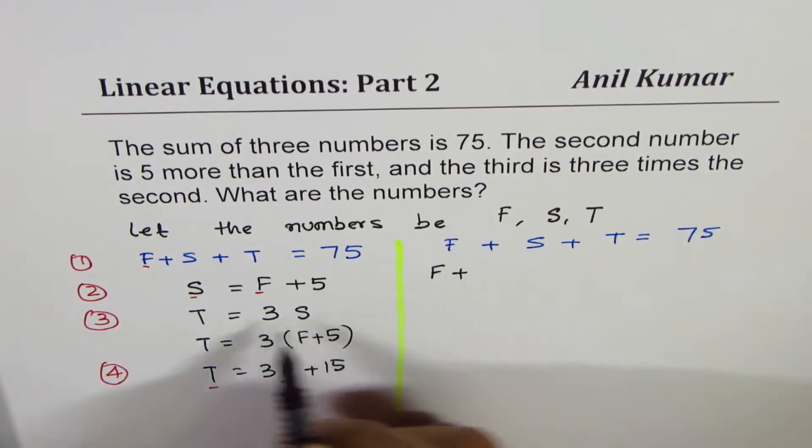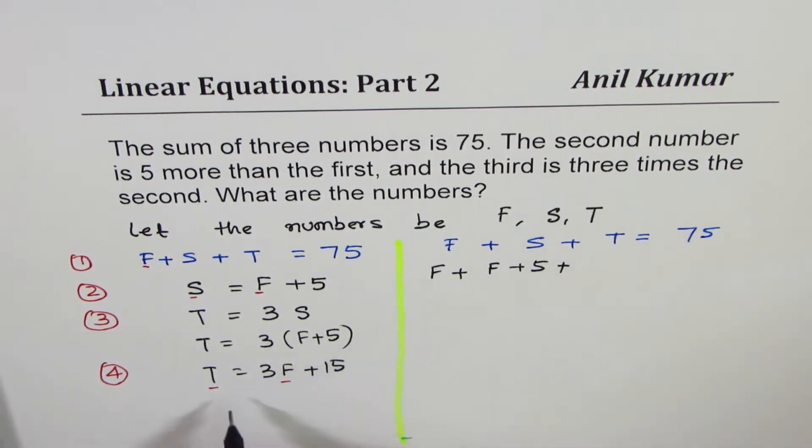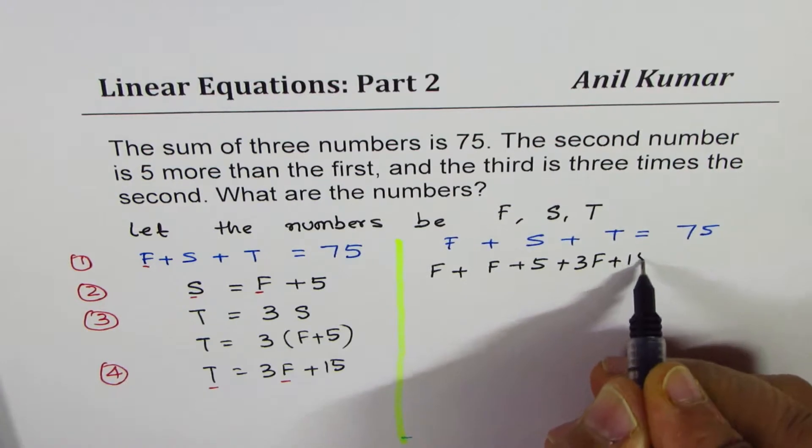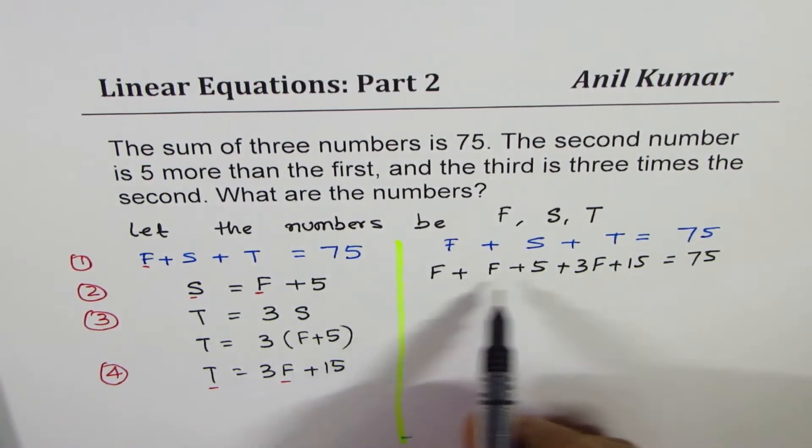And the third number will be written as three times the first number plus 15, all equal to 75. This equation has only one variable.